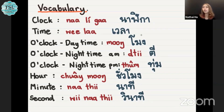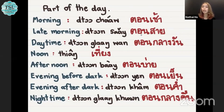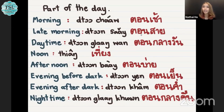Out of this vocabulary, we also have to learn about parts of the day. Let's see parts of the day. This starts from morning. Morning in Thai, we say ตอนเช้า, ตอนเช้า. Late morning: ตอนสาย, ตอนสาย.